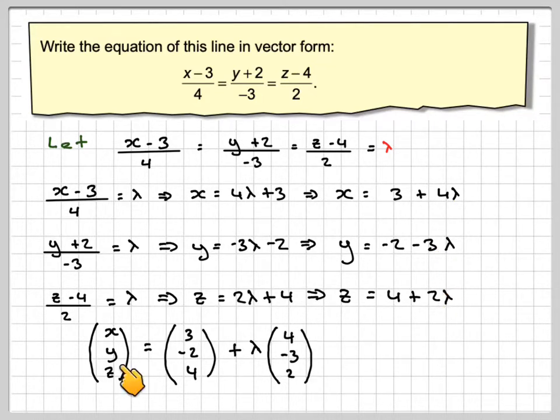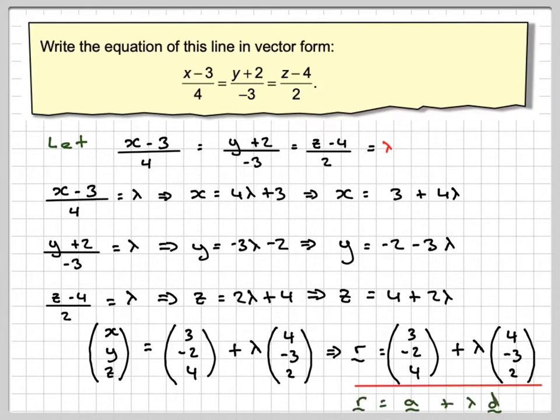We usually use r for x, y and z, so r will be equal to 3, minus 2, 4, plus lambda, 4, minus 3, 2, which gives me that r is equal to a plus lambda d.